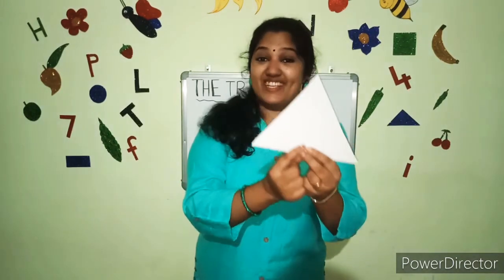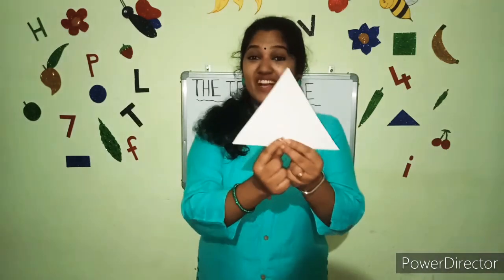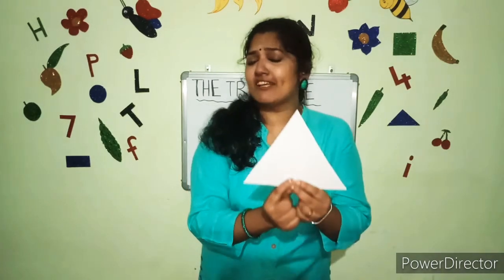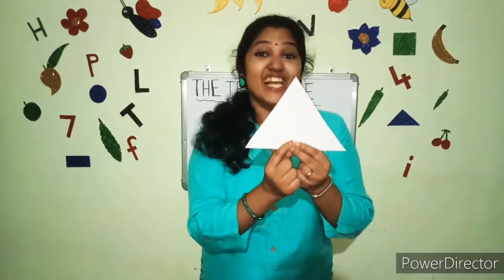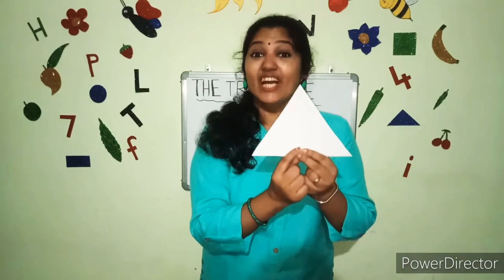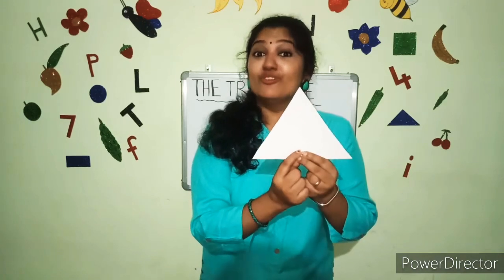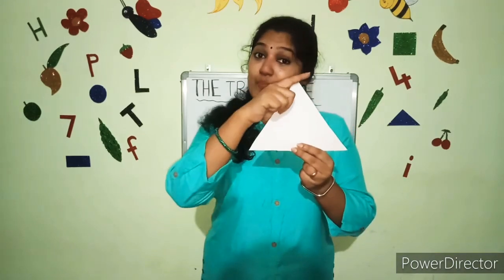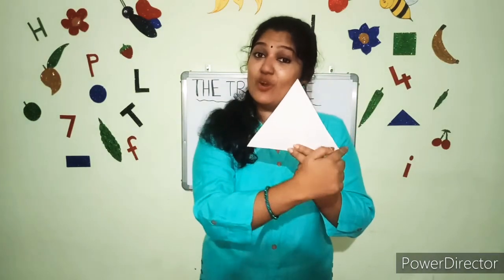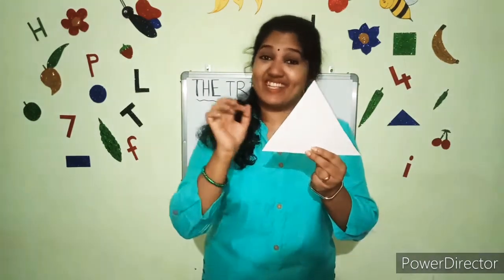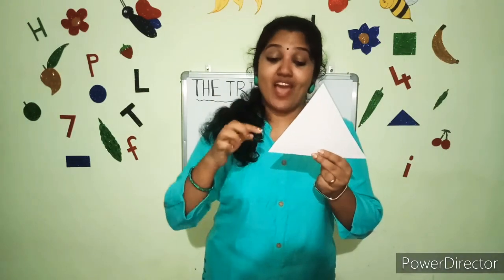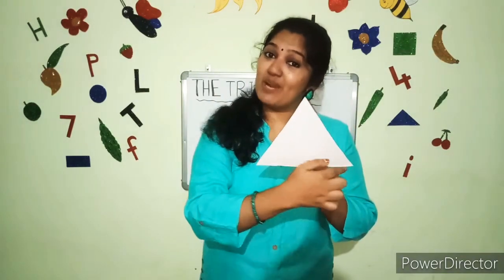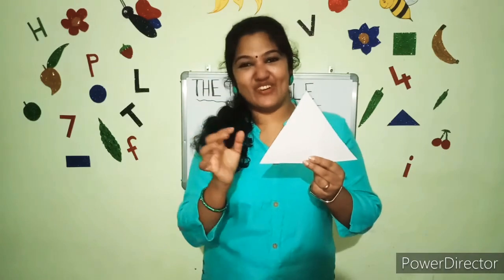This is a triangle. It's easy to draw. Up the mountain, down and back — it's easy to draw. Up the mountain, down and back — it's easy to draw.